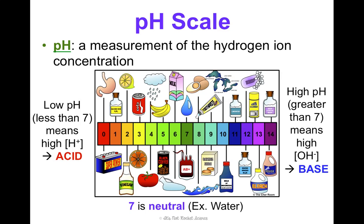An example of this is all these that we see on here. And right in the middle, number 7, which is neutral, is water. Notice your blood is really right around 7 also, just because your blood has a lot of water in it.